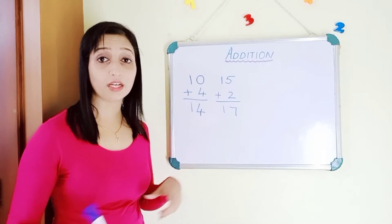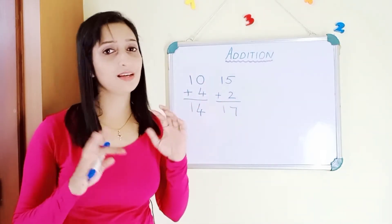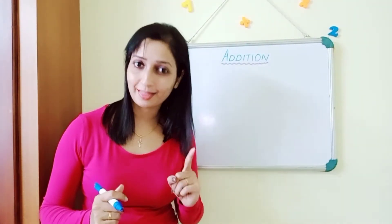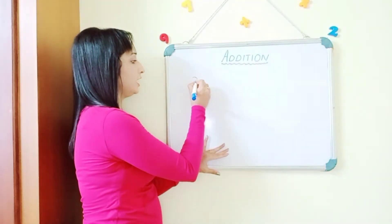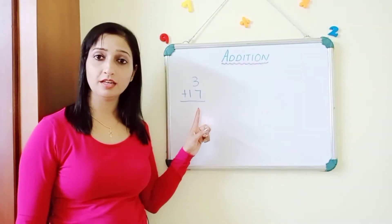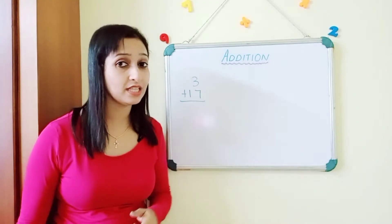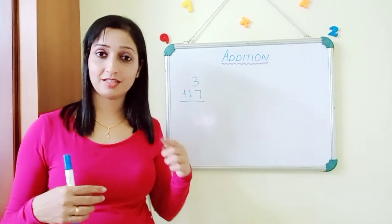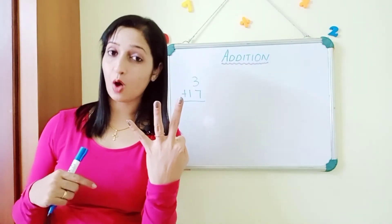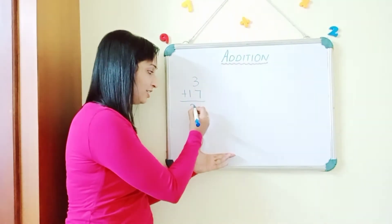This is how you handle two-digit numbers — you follow the same rule: keep the bigger number in your mind and the smaller in your hand. Now what if the question is written as three plus seventeen, where the bigger number is written second? Even so, always take the bigger number in your mind. Seventeen is the bigger number, so seventeen in your mind and three in your hand. Count forward after seventeen: eighteen, nineteen, twenty. The answer is twenty.